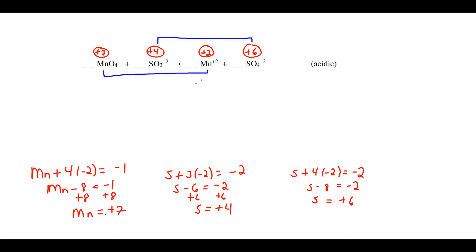Let's look at the number of electrons involved in each process. Manganese is going from plus seven down to plus two, so that's going to be five units of change, therefore five electrons.